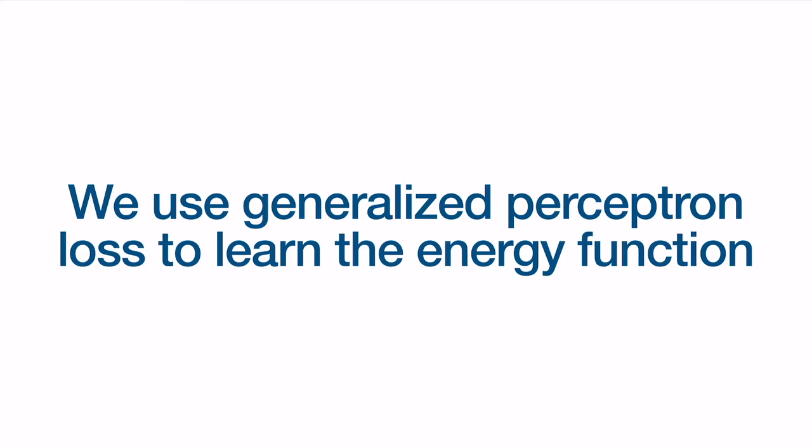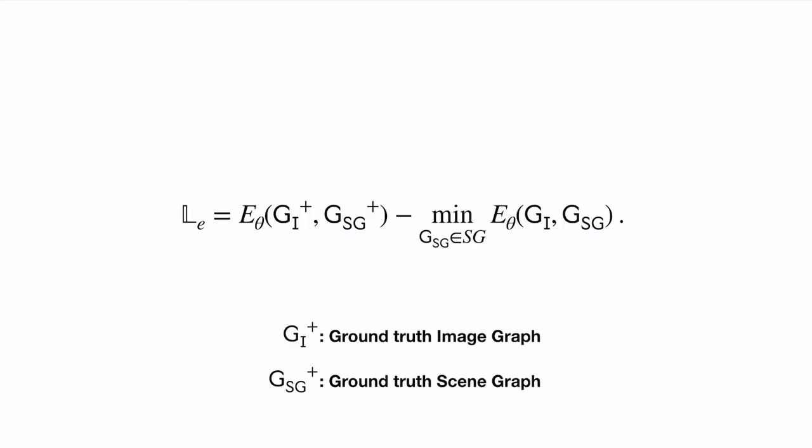To train the energy model, we use a generalized perceptron loss which takes the form shown. The first term corresponds to the energy value of the image and ground truth scene graph. The second term involves an optimization problem to find a scene graph configuration with minimum energy.